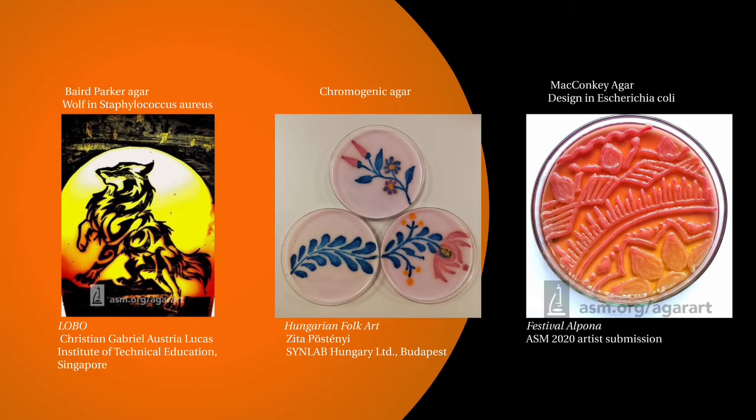The ombre effect, seen in the right piece, is because the media contains lactose. E. coli can ferment lactose, but it differs in strains, so the fermentation, when exposed to the presence of neutral red pH indicator, shows the differing patterns of fermentation in the strains.